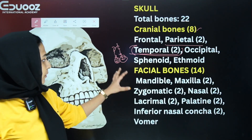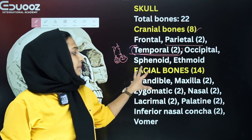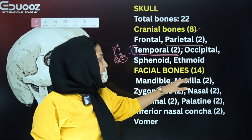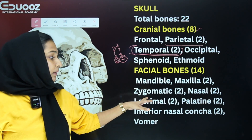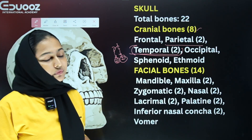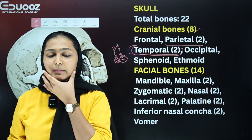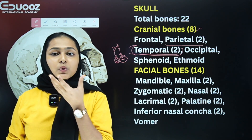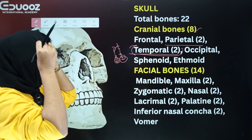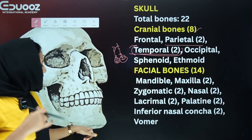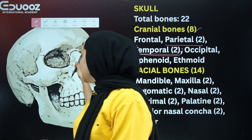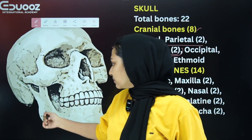Now for the facial bones: there is the mandible and the maxilla. The mandible is the only movable bone of the skull. The zygomatic bones, lacrimal — 2 each, palatine — 2, inferior nasal conchae — 2, and the vomer — 1.